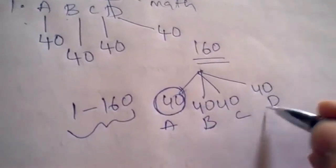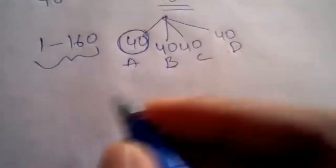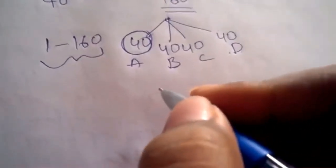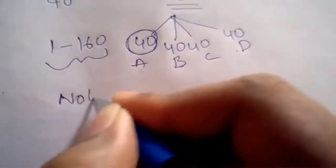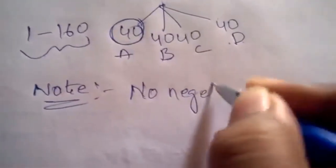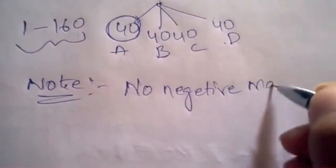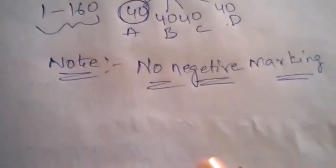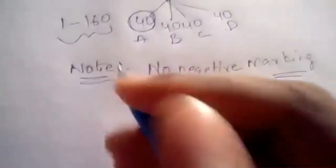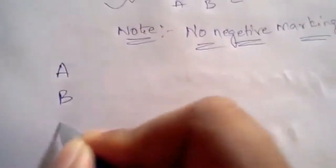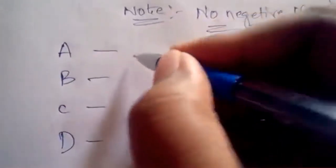So first answer all the questions which you know. And the important point to be noted is there is no negative marking, which is a great advantage for students appearing for MSET. So after answering all the questions which you know, just calculate how many options you have answered.